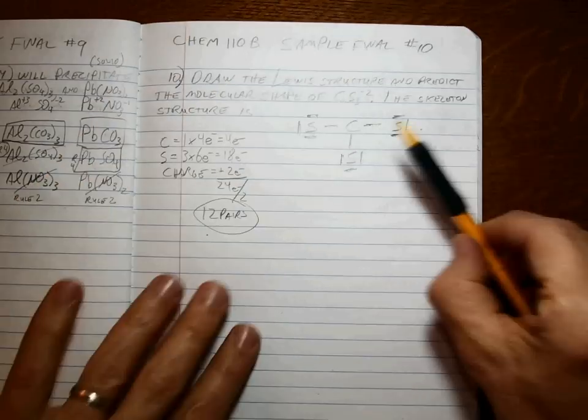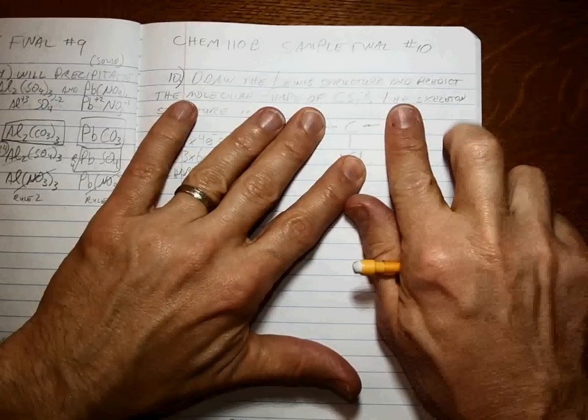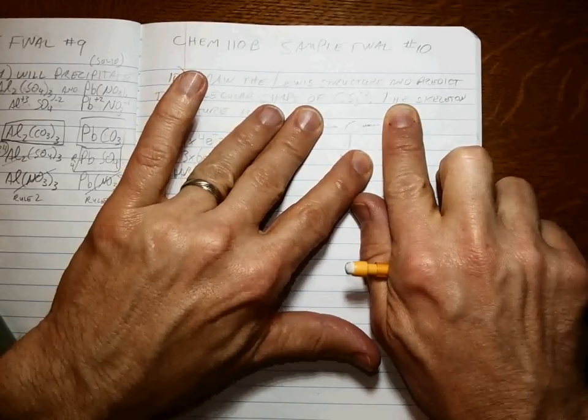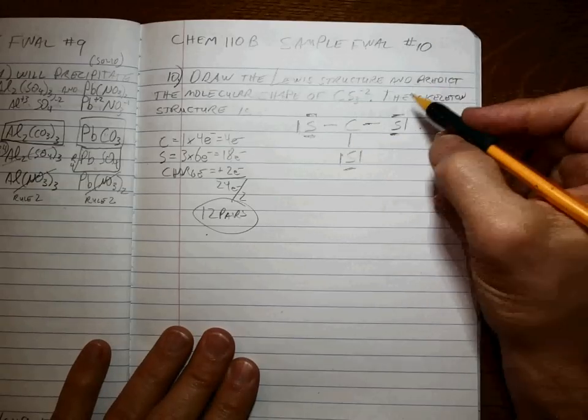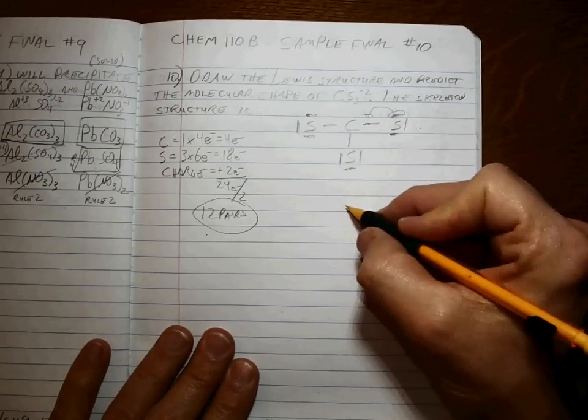Total of 8 electrons around each of those, but the carbons, or the carbon, the center carbon only has 2, 4, 6. So it's not happy. So somebody has to share. Doesn't matter who. Let's say this one.